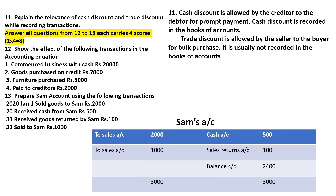Show the effect of the following transactions in the accounting equation: Assets = Liabilities + Capital. The transaction will increase an asset or decrease a liability. A transaction with cash worth 20,000 increases the capital.